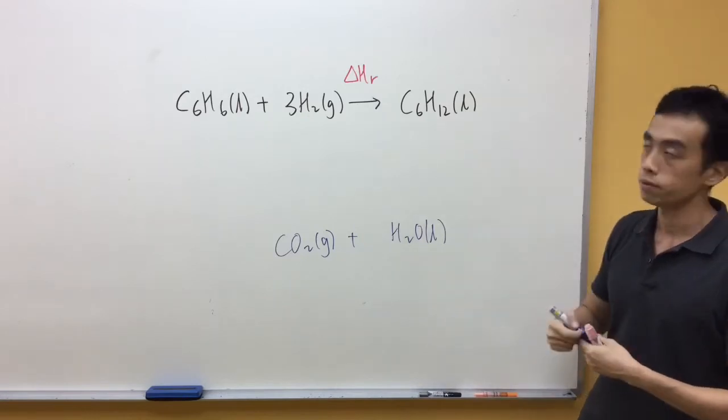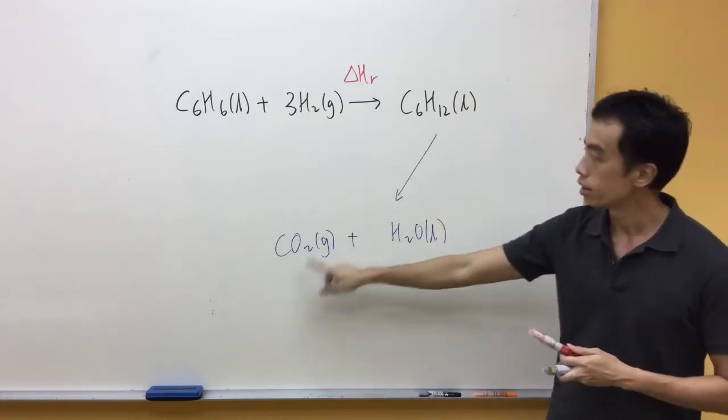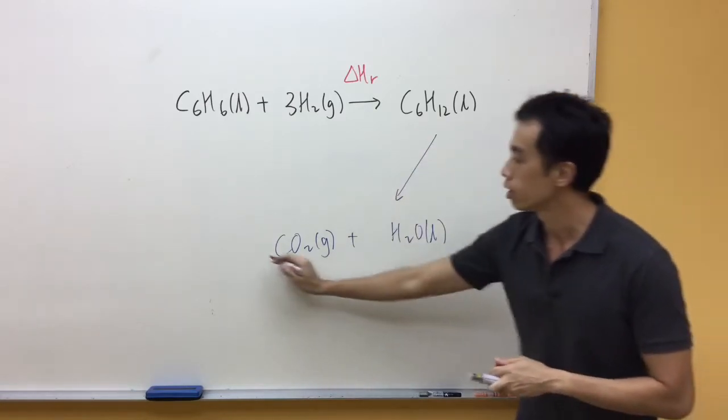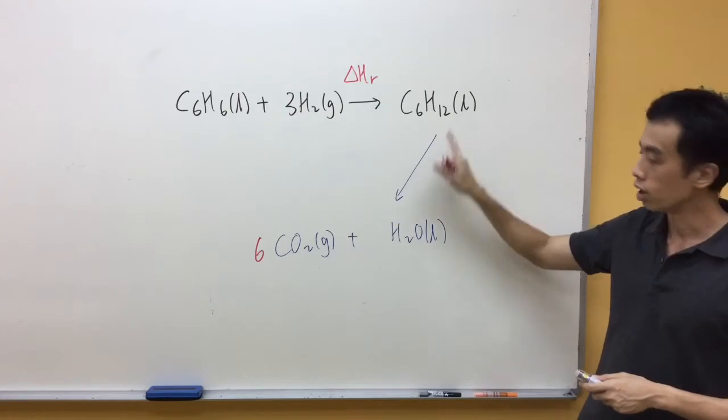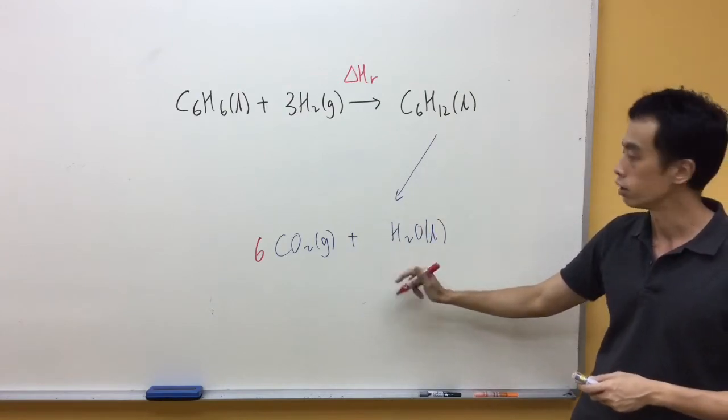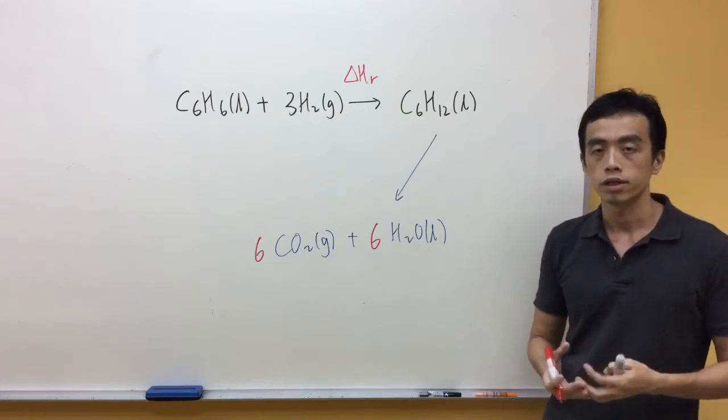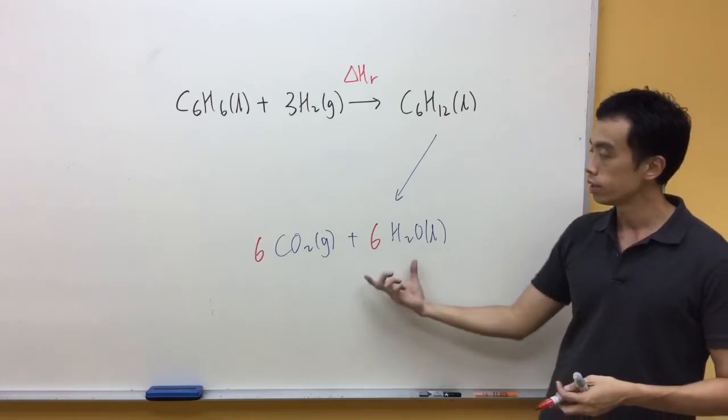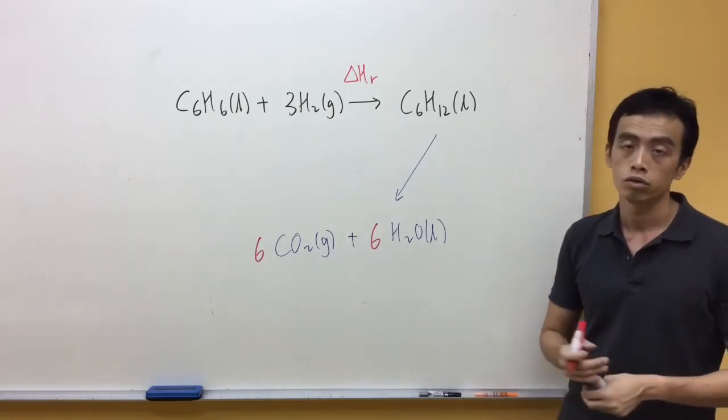Now, if I want to balance this equation, I need to balance the carbon. Six carbon here, so I need six carbon dioxide. 12 hydrogen in C6H12, so therefore I need six water. The next thing I have to consider is oxygen. All together here, I will have 12 oxygen here, six oxygen. In total, 18 oxygen.